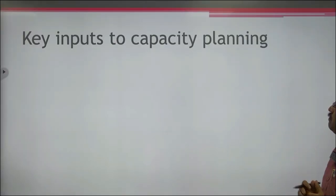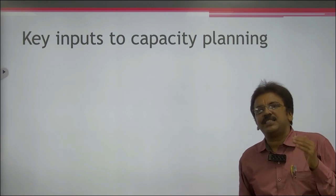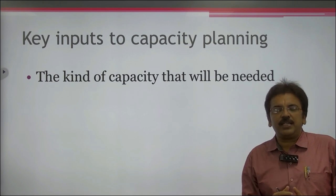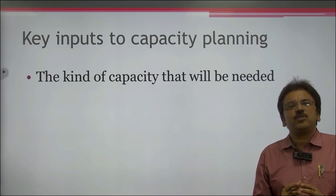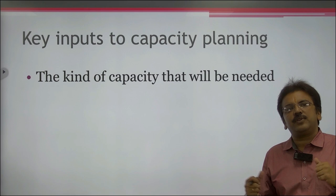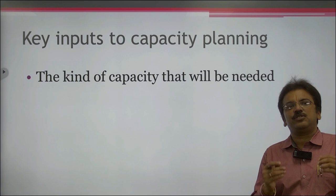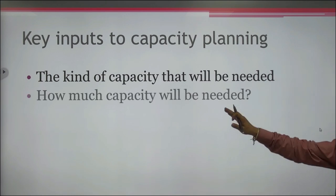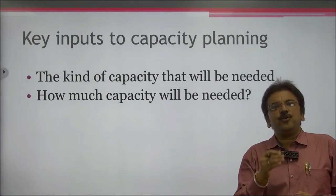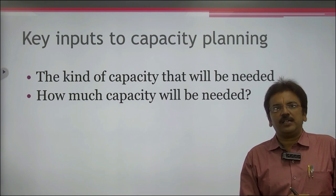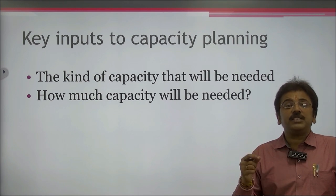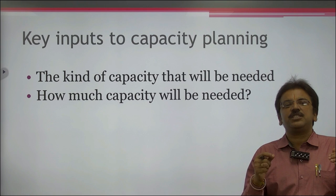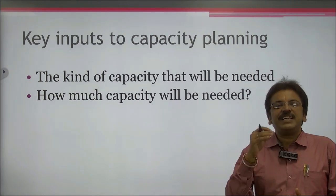Key inputs to capacity planning include: first, the kind of capacity that will be needed — whether it is process capability, raw material capability, or labour and manpower capacity, meaning what skills and resources a specific person needs to perform a specific duty. Second, how much capacity will be needed — divided into specific numbers, such as how many people are required, what process time is needed, and what type of plant and location is involved.